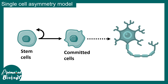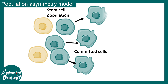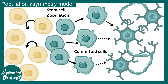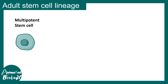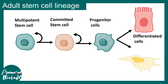Stem cells eventually get committed and form a differentiated cell type. A stem cell has two choices: either to differentiate or to self-renew. People have proposed a population asymmetry model — in a pool of stem cells, some cells are more prone to give rise to committed cells that eventually differentiate into a lineage, while others are more prone to self-renew. Other models suggest that stem cells decrease their potency sequentially: they become committed stem cells, then progenitor cells, and eventually give rise to different cellular lineages.